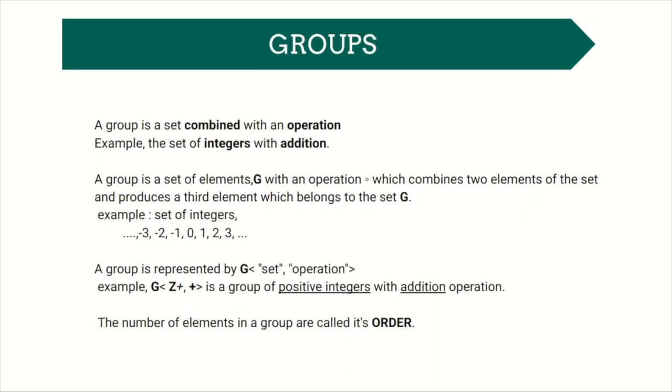Now that we understand sets and operations, you know the basic building blocks that make up groups. Simply put, a group is a set combined with an operation. For example, the set of integers with addition. A group is a set of elements with an operation which combines two elements of the set and produces a third element which again belongs to the set G.